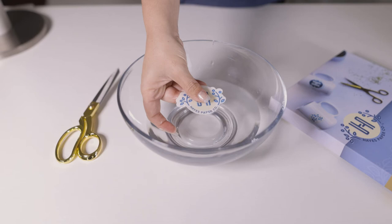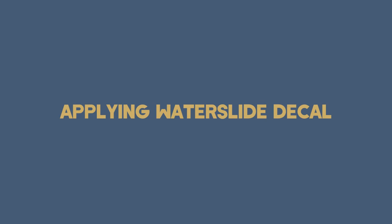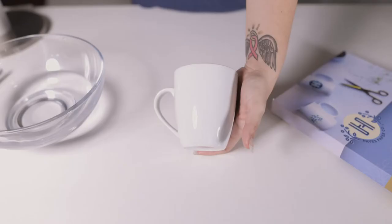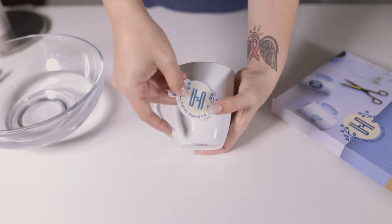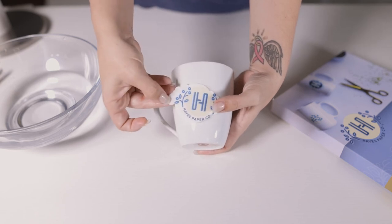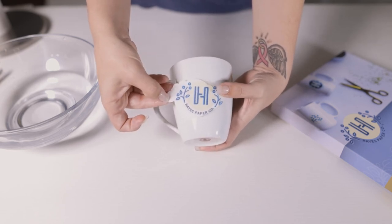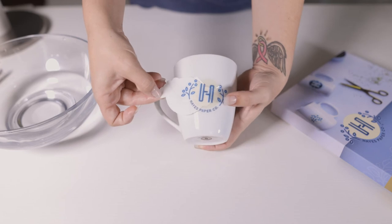To apply your decal, wet the surface that you want to apply the decal to. Slide the decal slightly off the backing and hold down with your thumb. With your other hand, gently slide the backing out from behind the decal. Note: never take the decal completely off of the backing prior to laying it flush against the object you are applying it to. This can cause it to wrinkle or crack.